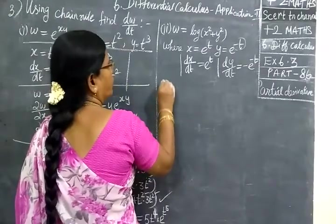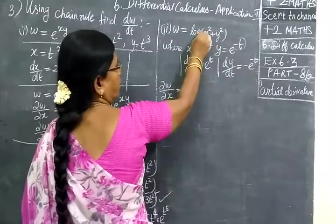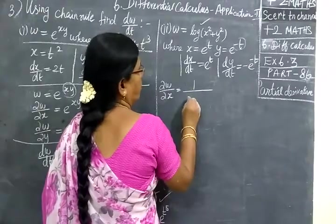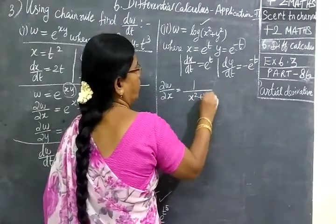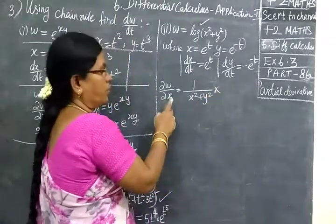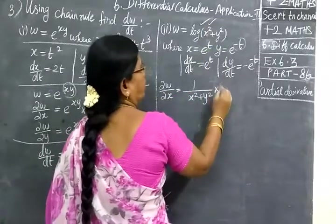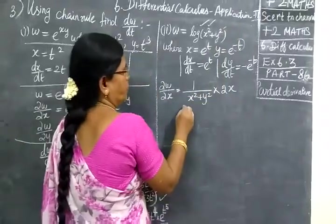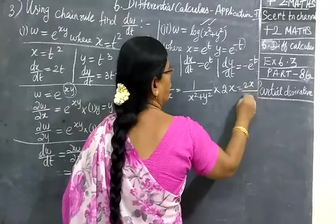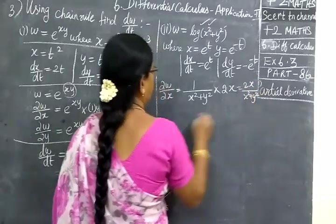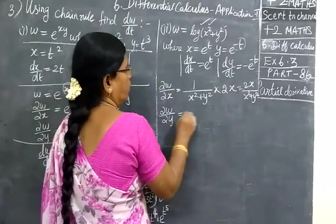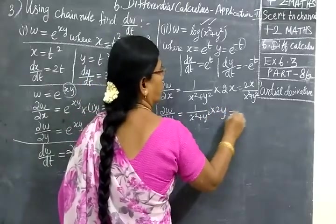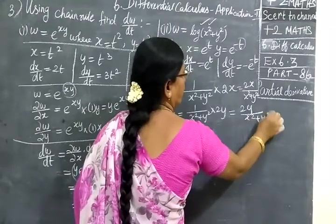Next, you are finding ∂w by ∂x. We differentiate — that is, partially differentiating with respect to x. So we have 1 by x square plus y square into the inner derivative, partially differentiating with respect to x. It becomes 2x, and y square is a constant so it becomes 0. So this equals 2x by x square plus y square. Similarly, ∂w by ∂y equals 1 by x square plus y square into 2y, equal to 2y by x square plus y square.